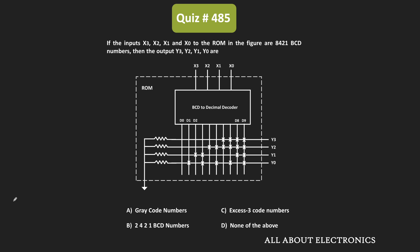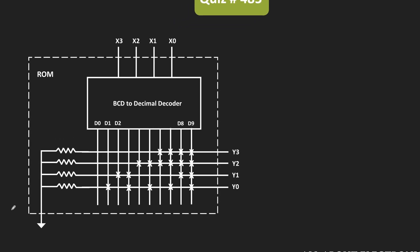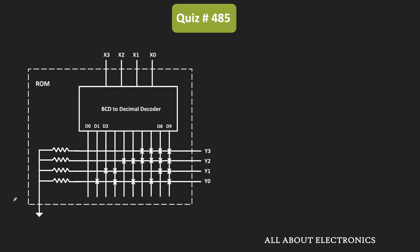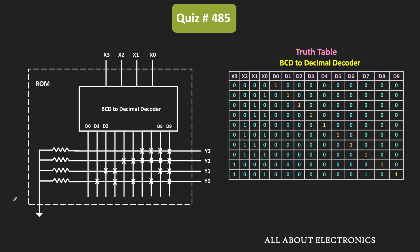If you see the circuit diagram of this ROM, it consists of a BCD-to-decimal decoder and memory cells. In this BCD-to-decimal decoder, X3, X2, X1, and X0 are the inputs. Based on this BCD code, any one of the 10 outputs of the decoder will go high.